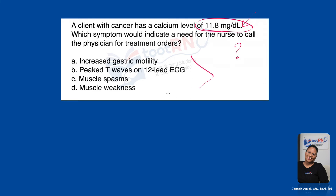We're going to use our detective skills and intuition to look at each answer option. If I look at A — increased gastric motility — it's hyperactive, indicating an increase of something. If I look at B — peaked T waves on a 12-lead ECG — these tall spiked T waves also show an increase of something. C says muscle spasms, which again is increased activity, hyperactivity, an increase of something. And D says muscle weakness, which would reflect something low — a lack of activity. So when I look at all of these answer options, that's something I can find in common, considering we're coming from a point of having no idea what any of this is.